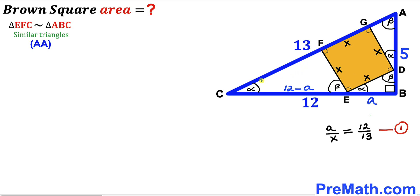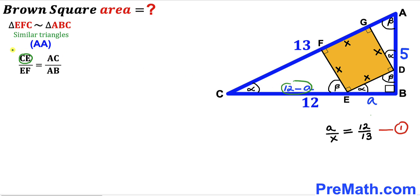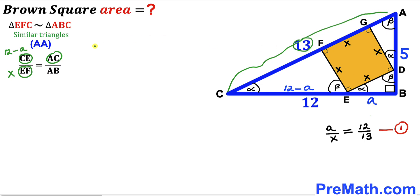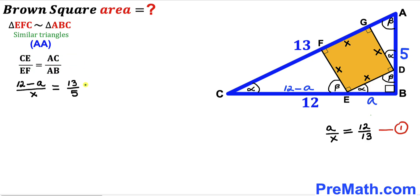Now let's focus on right triangle EFC and the big right triangle ABC. These are also similar triangles by the angle-angle similarity theorem. The proportion gives us: CE over EF equals AC over AB. CE is 12 minus a, EF is X, AC is 13, and AB is 5. So (12 minus a) divided by X equals 13 divided by 5.